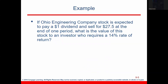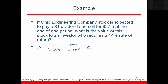The example involves Ohio Engineering Company, which is supposed to pay a $1 dividend and sell for $27.50 at the end of one period. The question is: what is the fair intrinsic price if the investor requires a 14% rate of return? The investor pays P0 now and receives $1 plus $27.50, a total cash inflow of $28.50. Discounting that at 14% gives a fair price of $25.